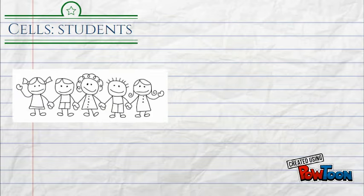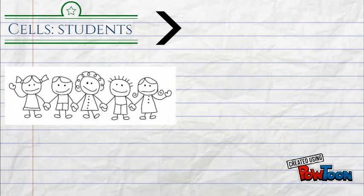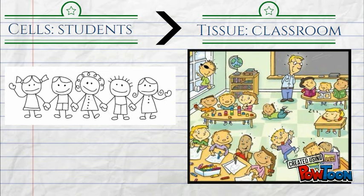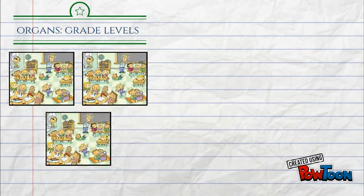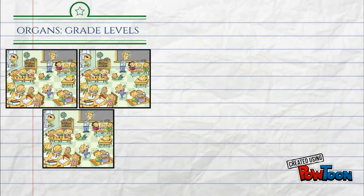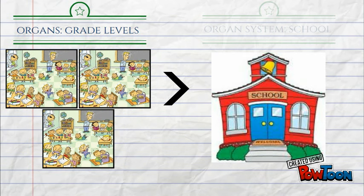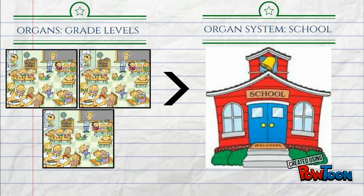Another way to think about this is to think of a school. The individual students are like the individual cells. When they come together to form a classroom, the classroom represents tissues. Each grade level represents an organ because a grade level is a collection of classrooms. Finally, the different grade levels form the whole school, which represents an organ system. Just like the different organs of an organ system work together to help it function, the different grade levels of a school all work together to make the school whole.